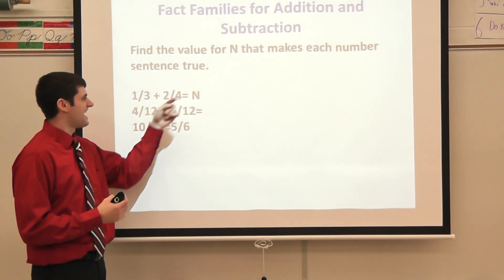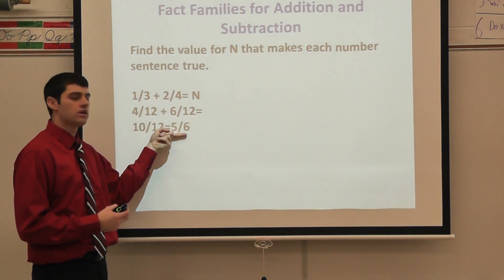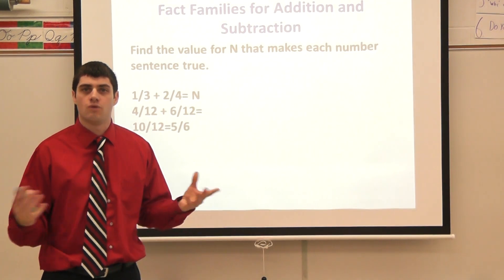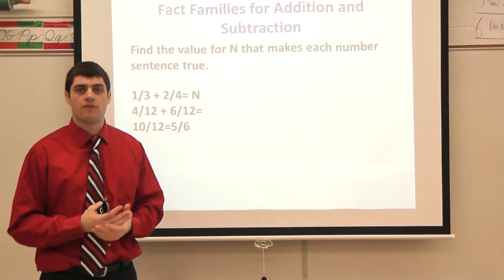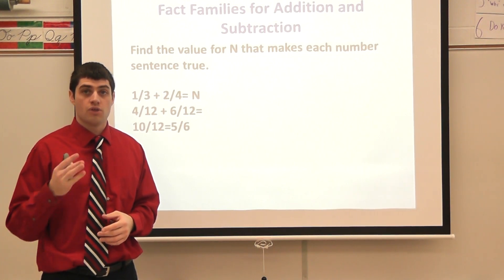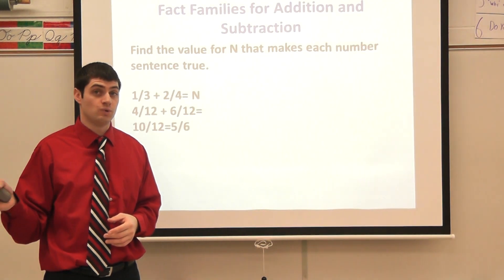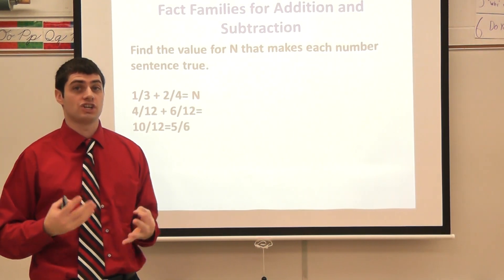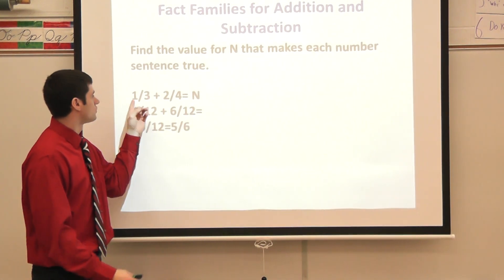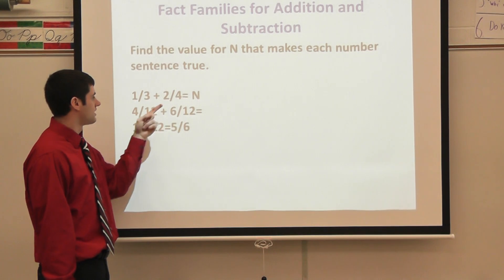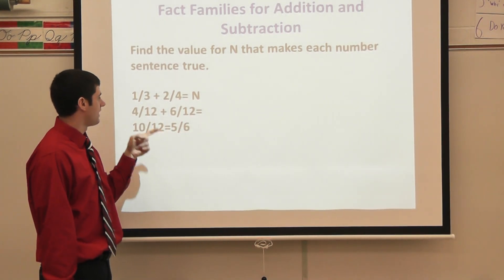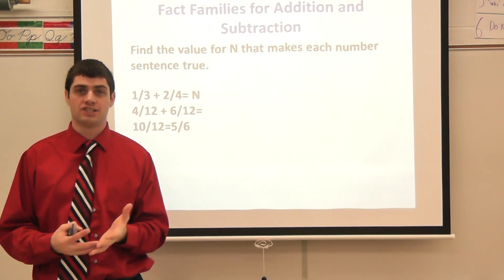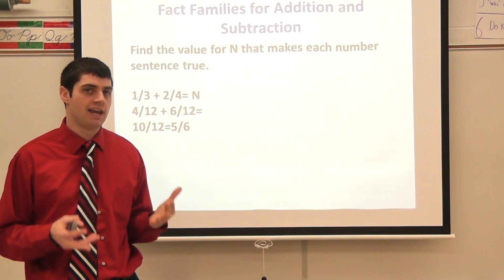I can simplify ten twelfths to the lower equivalent fraction five sixths. So in my original problem, n stands for five sixths. Now that makes up a fact family. Think back to first grade when you learned about fact families: two plus three is five, three plus two is five, five minus three is two, five minus two is three. You can do the same thing with fractions. One third plus two fourths is five sixths; two fourths plus one third is five sixths; five sixths minus one third is two fourths; and five sixths minus two fourths is one third.